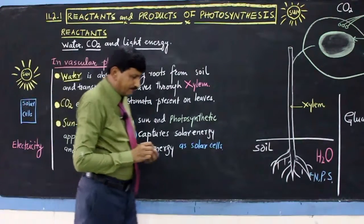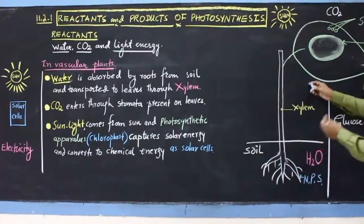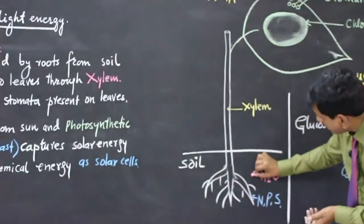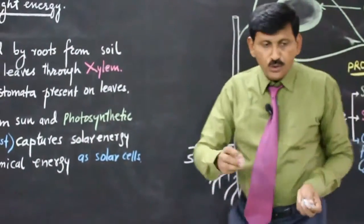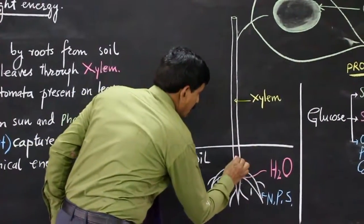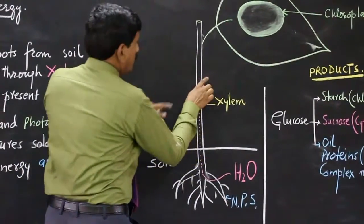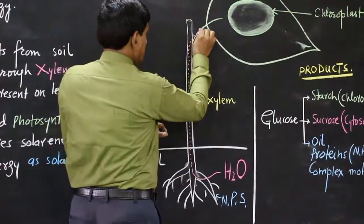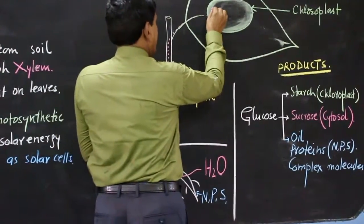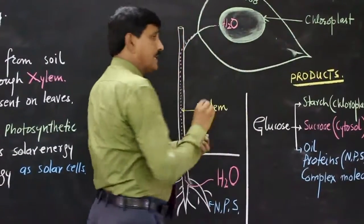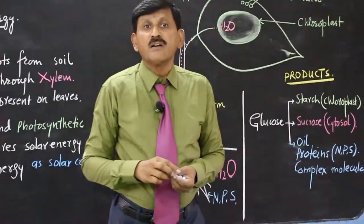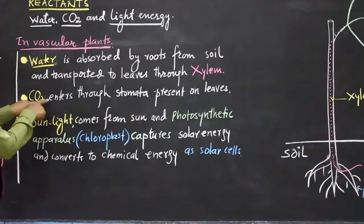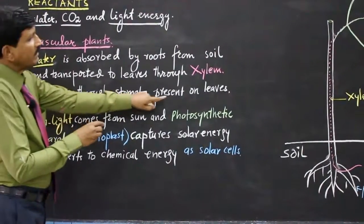Here is a plant — from soil, plants absorb water (water absorption ke baad), and this water is transported to the photosynthetic organ, means leaves, through the xylem. Through the xylem, water reaches into the chloroplast, and the chloroplast is the photosynthetic apparatus. Then, carbon dioxide enters through stomata present on leaves.